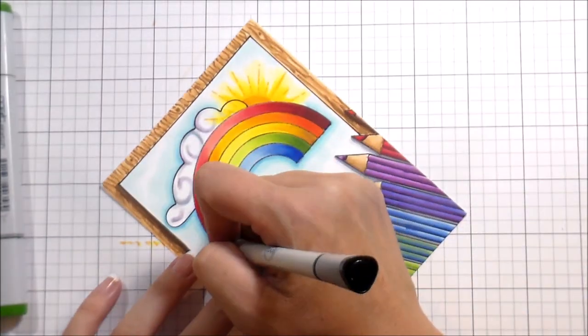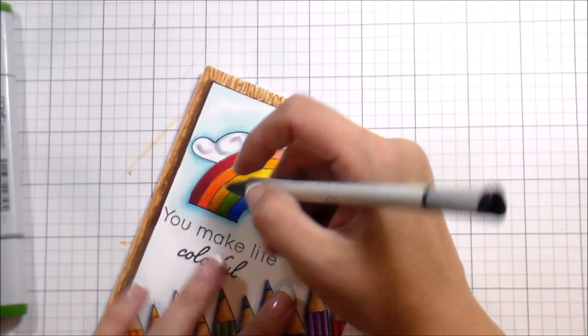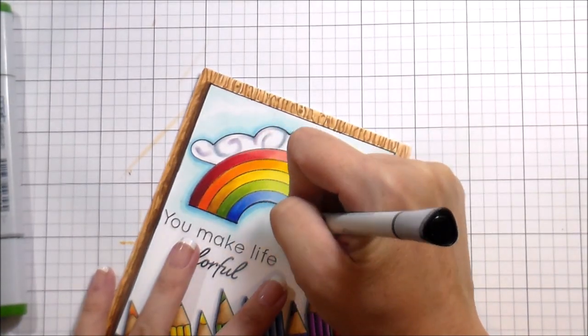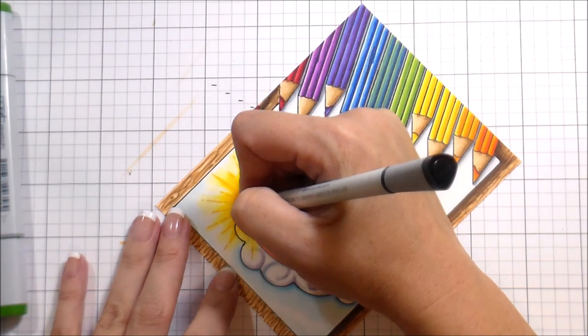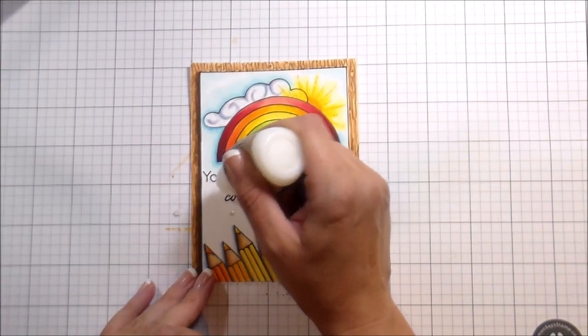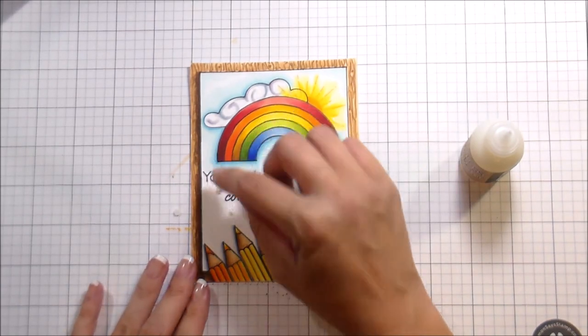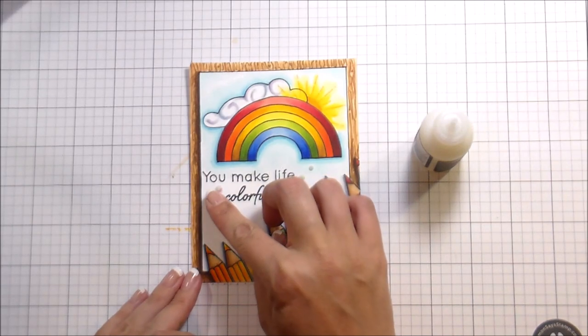And then you all know what's coming next. We're going to outline this business. I'm going to outline all the business because I cannot help myself. It just looks so much better. And there are people who say, you know, can't you just stamp it again? Yes, I probably could. But to me, this is easier and I enjoy the process. I enjoy the outlining, but you very well could just over stamp it.